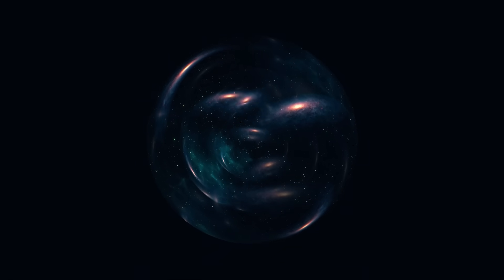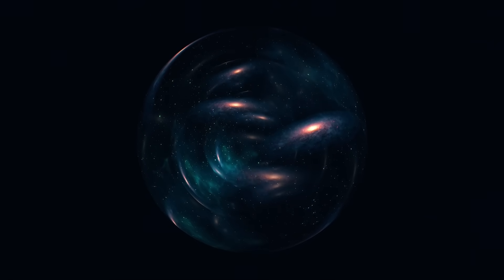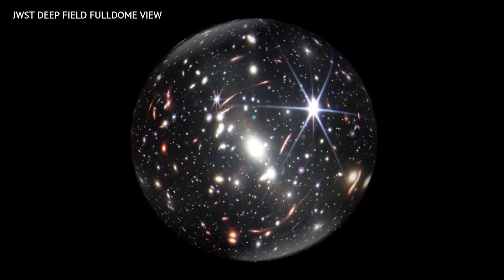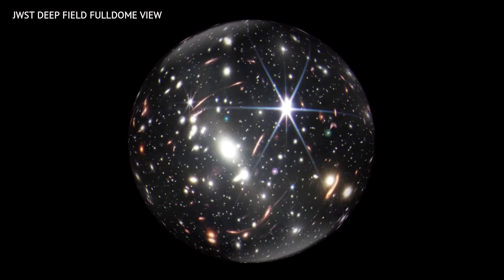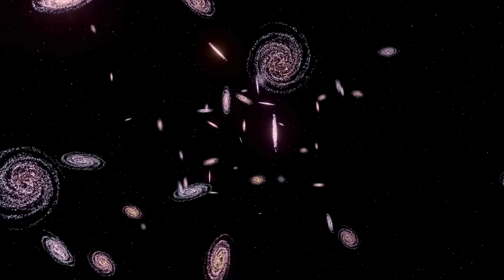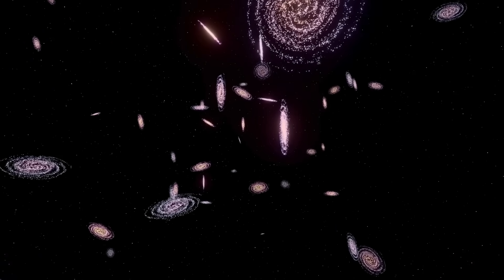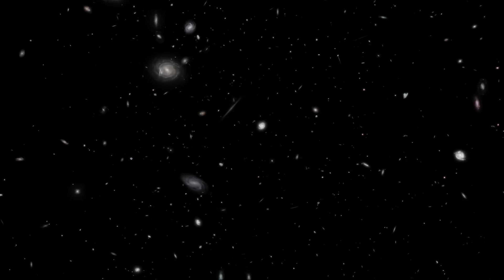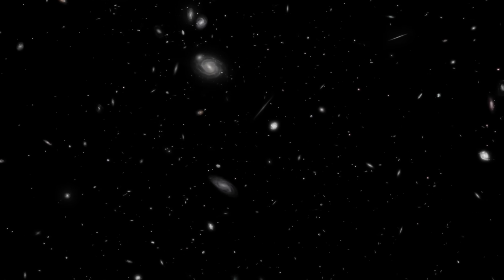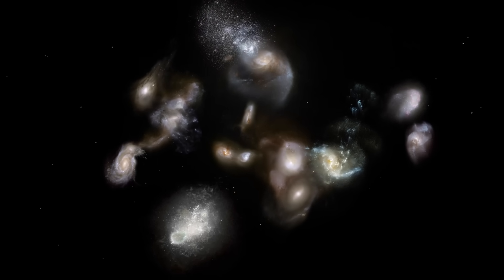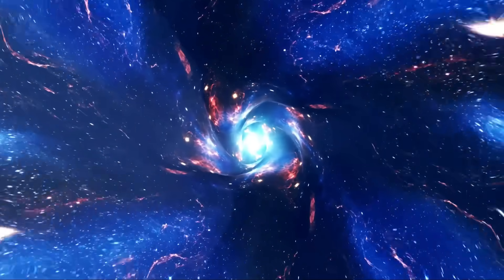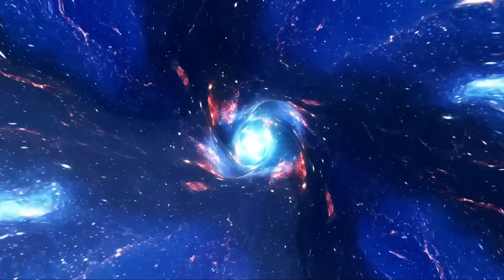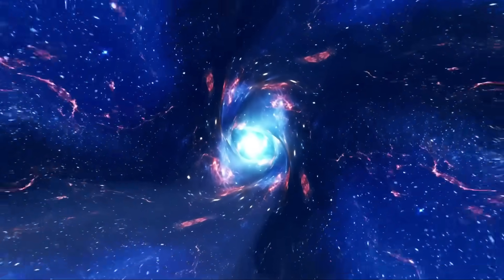Another intriguing possibility is that the universe may have a preferred axis. Observations of large-scale cosmic structures suggest a certain alignment in the way galaxies are distributed and move, rather than being entirely random. This so-called cosmic anisotropy challenges the widely accepted cosmological principle, which assumes the universe is isotropic and homogeneous on large scales. If the universe does have a preferred direction, it could point to unknown physics at play, possibly related to the way our universe formed inside a black hole, or how fundamental forces interact on the grandest scales.